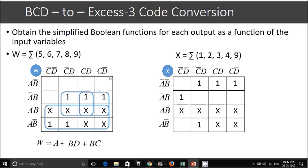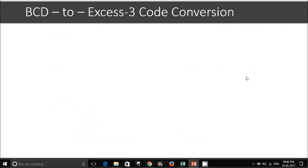Similarly, X is given as sigma of 1, 2, 3, 4, 9. We will get the mapping like this. If you see the mapping, this is B, B common, C bar, D bar. And if you see this mapping, we will have B bar D. And this mapping, it is BC bar.